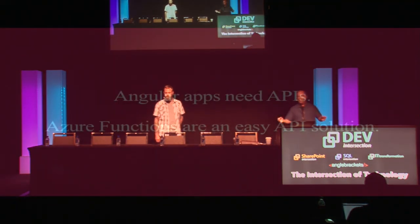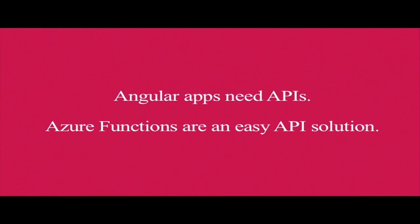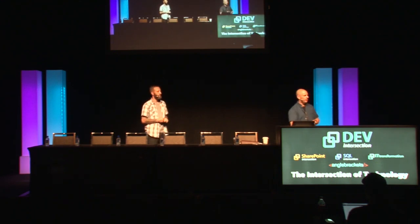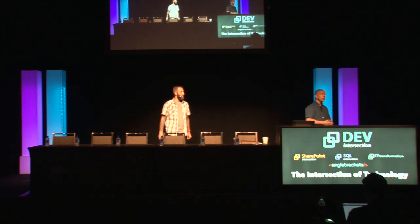The point of this session is: apps need APIs - in this case Angular apps - and Azure Functions are a really easy way to get there. When you're building Azure Functions, you can go into the portal, write code, and be all set. Azure Functions gives us the ability to connect to existing APIs through Logic Apps, through databases that exist on Azure, blob storage, and many other Azure products.